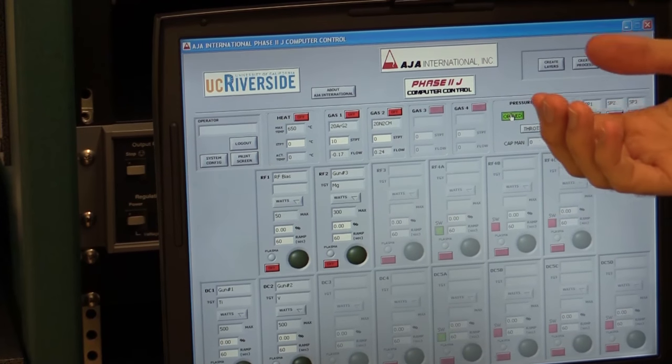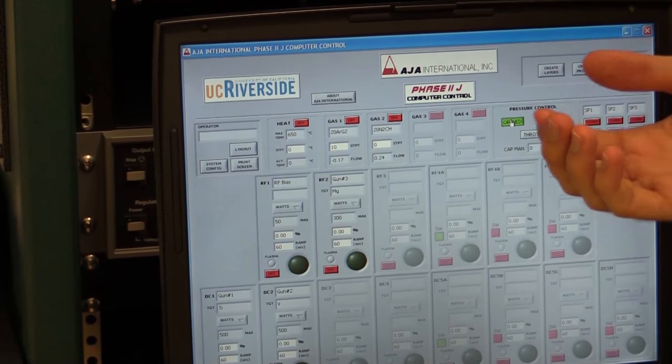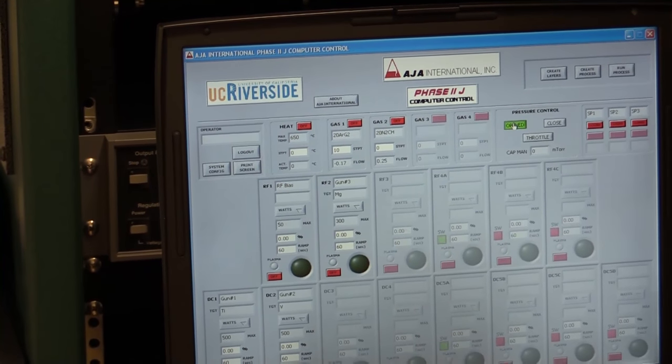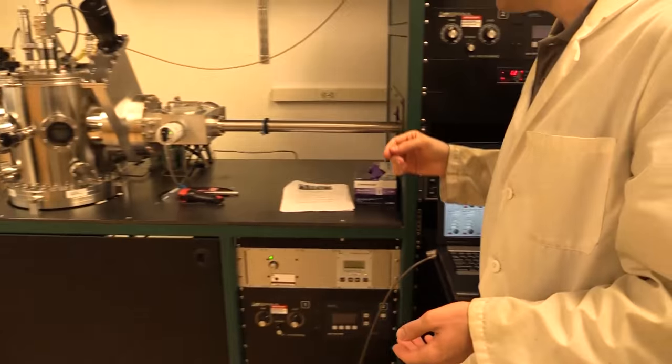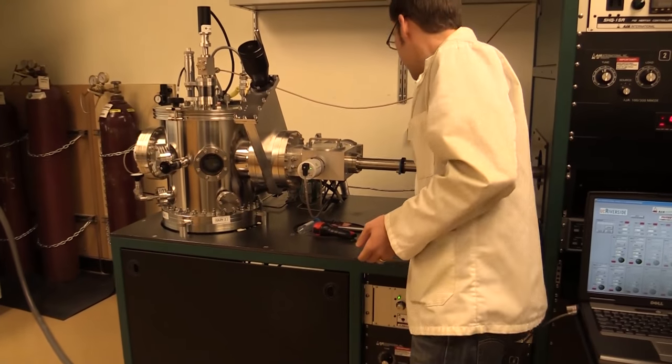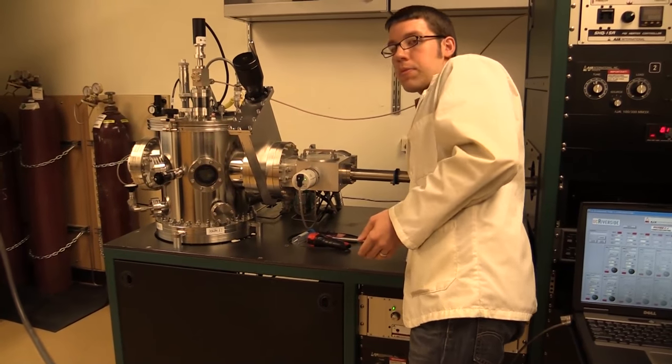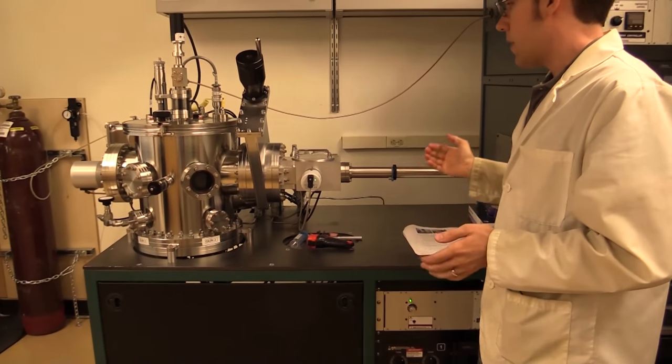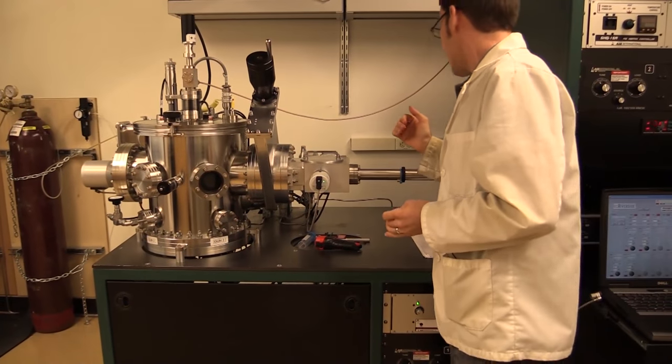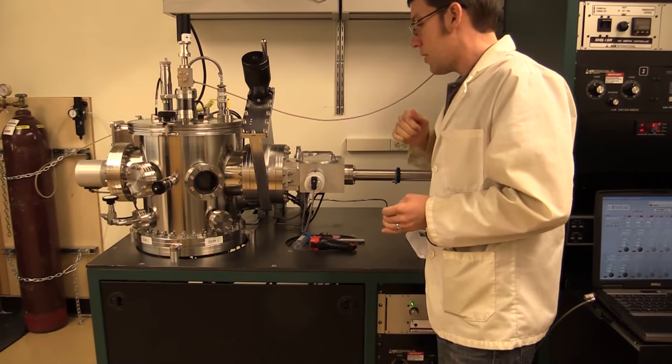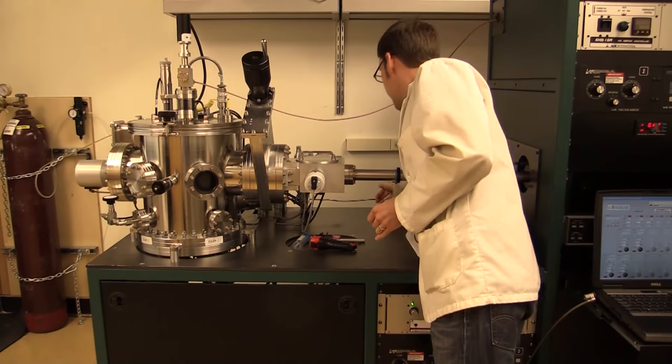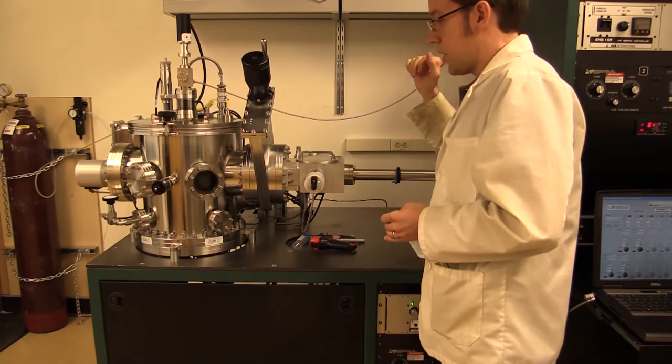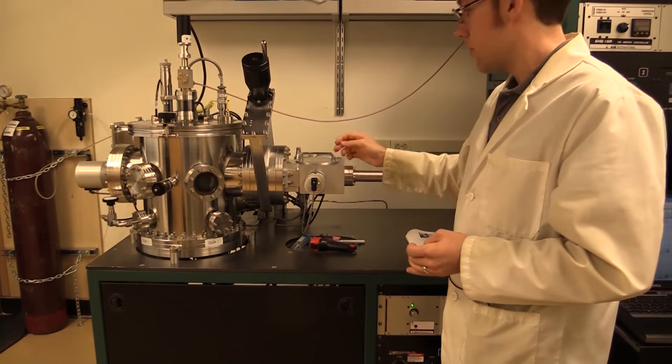To vent the load lock chamber, we need to open a shuttle valve which is on the back side of the sputtering system. I'll just point to it. It's back here. I'll rotate the valve counterclockwise to open, and at that point we'll have nitrogen gas to vent our load lock.